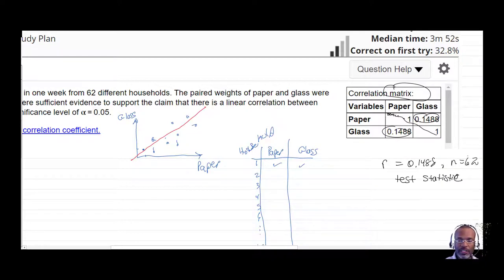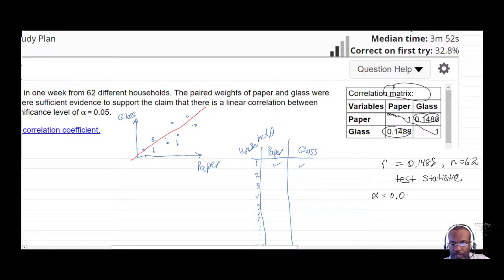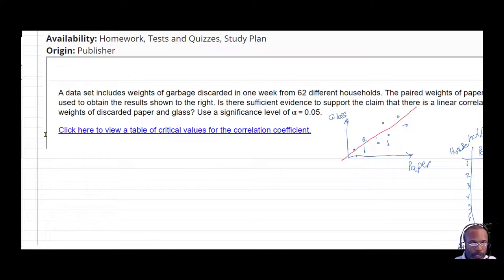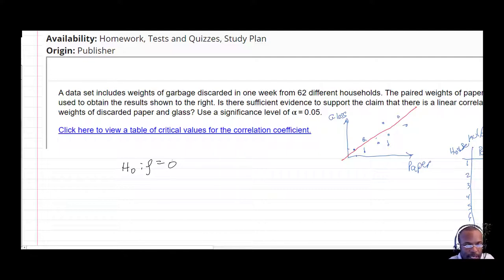What we want to do is investigate whether, given the 62 different households, there is correlation — whether we can hypothesize if there's enough evidence to support a claim of correlation. We're doing this at the alpha equals 0.05 significance level. Our null hypothesis is that for the population as a whole, even though we just have samples, we hypothesize about the population parameter rho — and we hypothesize that there's no correlation.